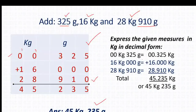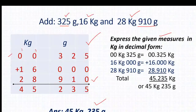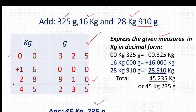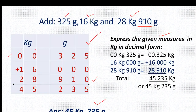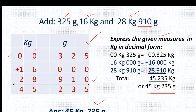Another way to do the same question is to convert the weights into kg. So 325 gram equals 00.325 kg, 16 kg equals 16.000 kg, and 28 kg 910 gram equals 28.910 kg. After adding these three we get 45.235 kg, or you can also say 45 kg 235 gram. With this we come to an end. I hope these questions are clear to you. Thank you. Have a nice day.